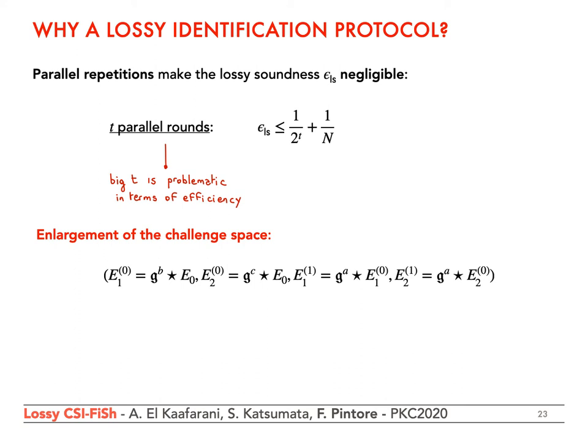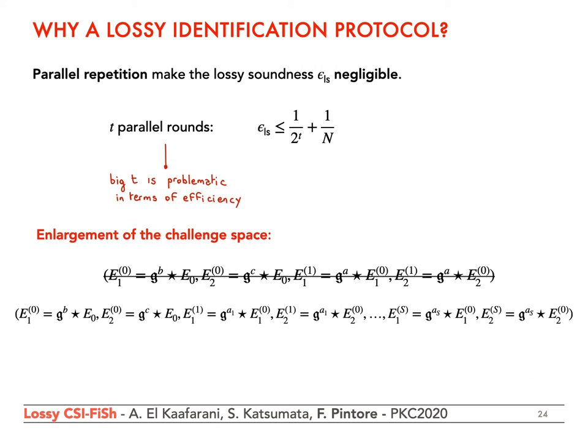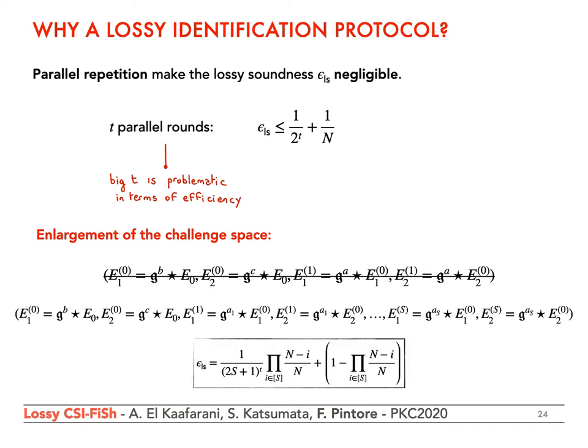The result is a new binary relation and a new hard problem with a reduction from CSide. In our original relation, the statement contains a couple of starting curves E01 and E02, and then a couple of arriving elliptic curves E11 and E12, obtained with the same witness a. In the variant that enlarges the challenge space, a statement still contains E01 and E02, but is then composed of s pairs of arriving elliptic curves: E11 and E12 through ES1 and ES2. The witness is now composed of s elements in Z_N: A1, A2 through As. Under this modification, epsilon_ls is given by an expression where the denominator of the first term is 2s+1 — the cardinality of the new challenge space — considering also the use of quadratic twists as suggested in the CSeaFish paper.